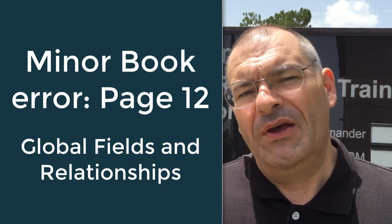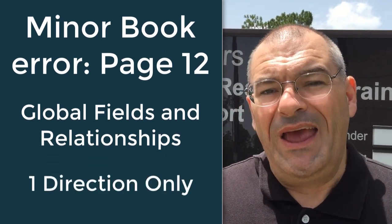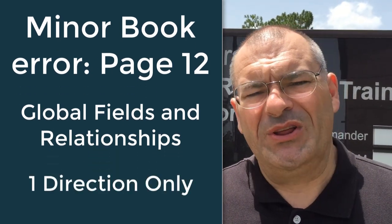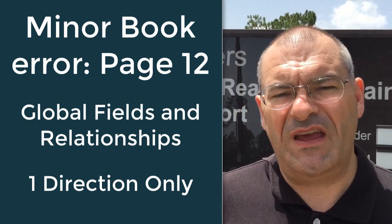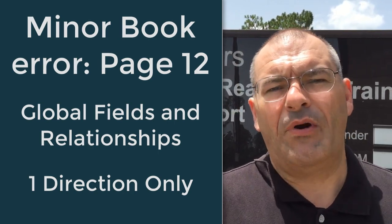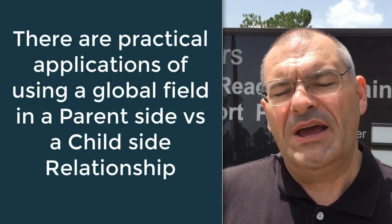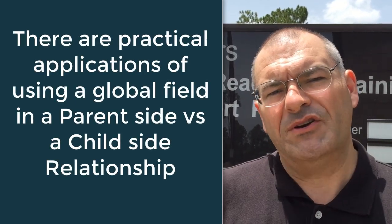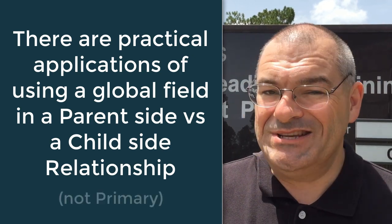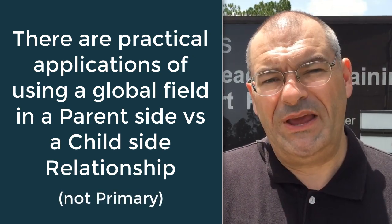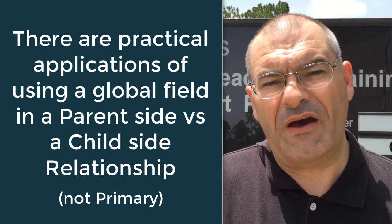A relationship that uses a global is one direction only — never really used with a primary key on the parent side. That sentence should say there are practical applications of using a global field in terms of a parent side versus a child side. So the word 'primary' right there is incorrect. We're going to give you a link to a PDF where you can print this page and insert it in your book.